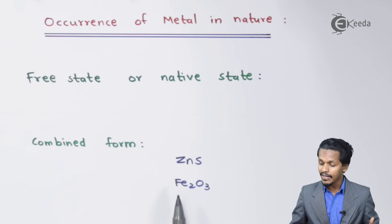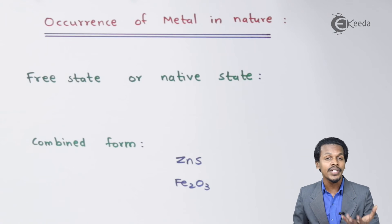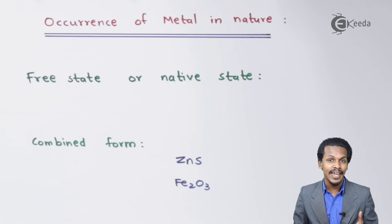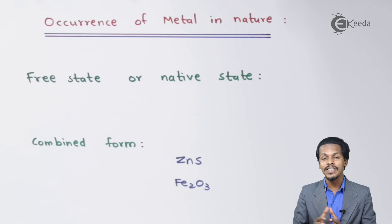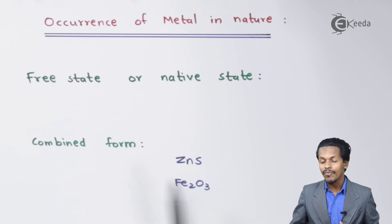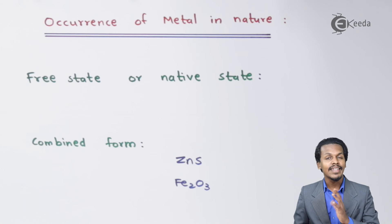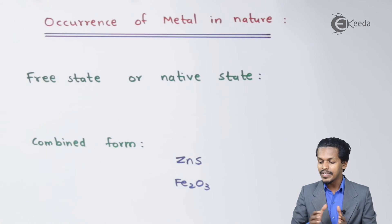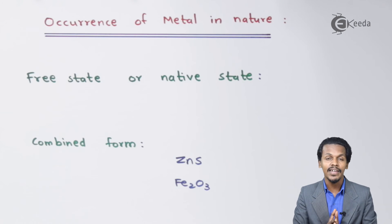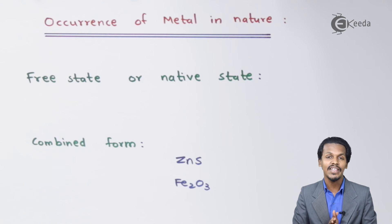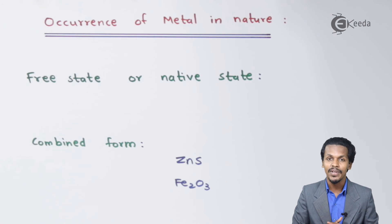Iron in Fe2O3 is in a combined form. So metals occur in two states in nature: the free state and the combined form.